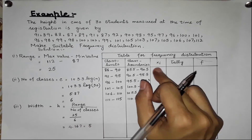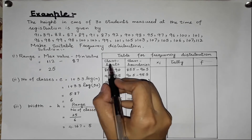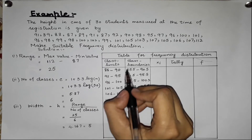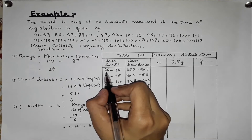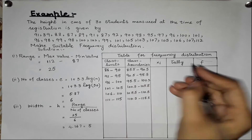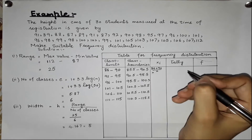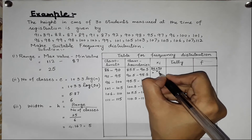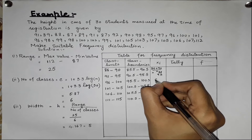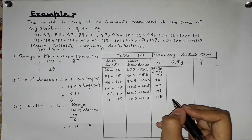Now we have to find xi, the midpoints. We find the midpoint by adding the lower and upper class limits and dividing by 2. For example, 86 plus 90 divided by 2 gives 88. The next midpoints are 93, 98, 103, 108, and 113.